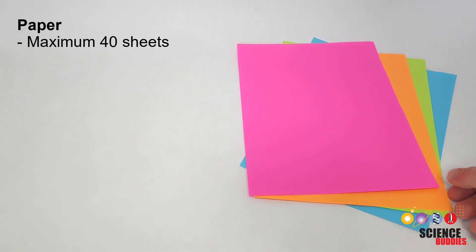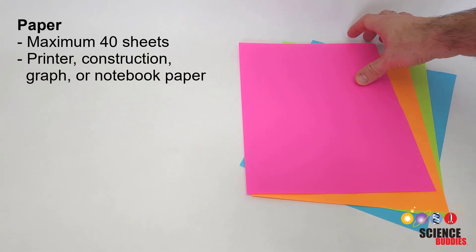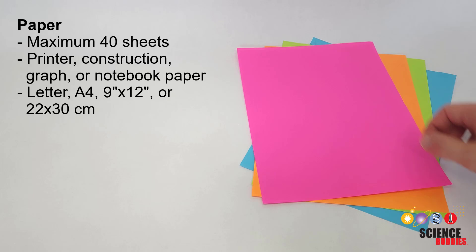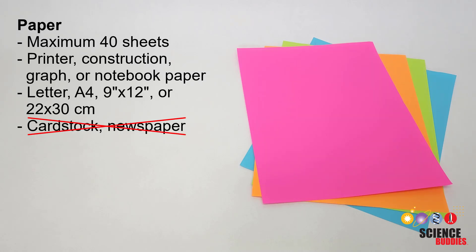You can use up to 40 sheets of paper. Printer, construction, graph, and notebook paper are allowed in letter, A4, 9 by 12 inch, or 22 by 30 centimeter sizes. Cardstock and newspaper are not allowed.